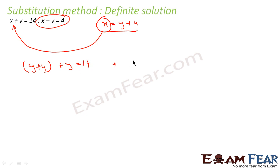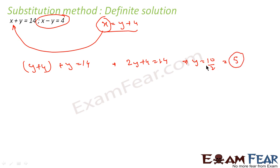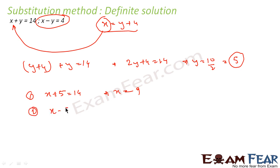So I get 2y plus 4 is equal to 14, or y is equal to 10 by 2, which is equal to 5. I got the value of y — a concrete, real value — which means it has a finite solution. Once I have the value of y, I can get x by substituting into equation 1: x plus 5 is equal to 14, so x equals 9.